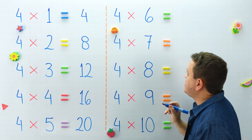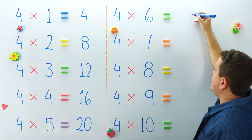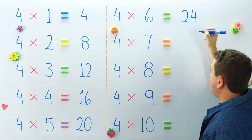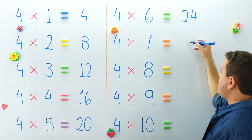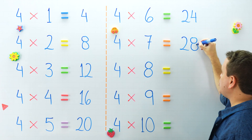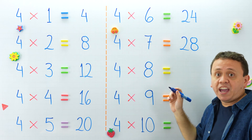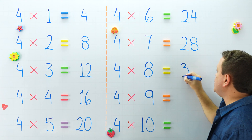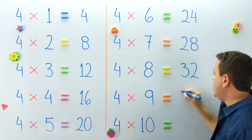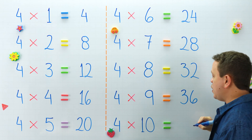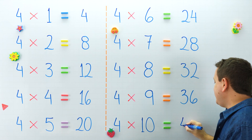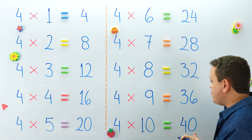Let's jump to the next column. 4 times 6 equals 24. 4 times 7 equals 28. And 4 times 8 equals 32. 4 times 9 equals 36. One more: 4 times 10 equals 40.